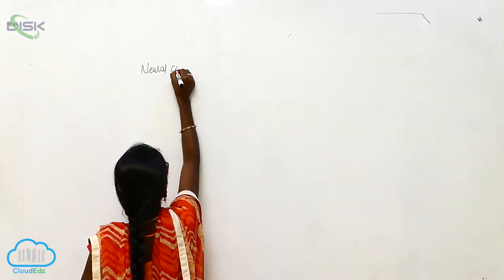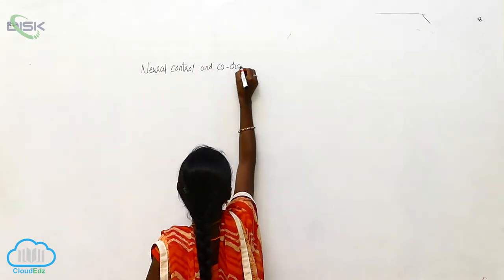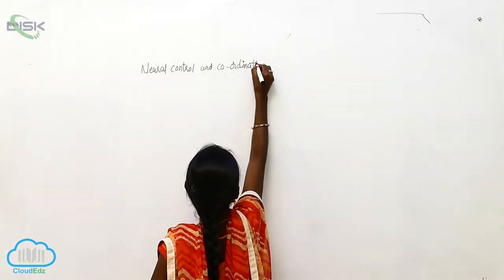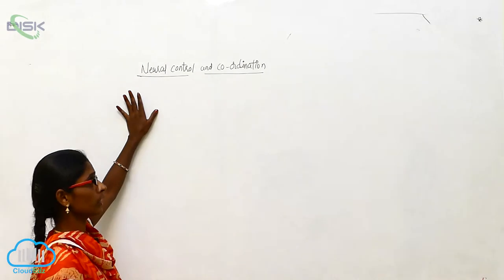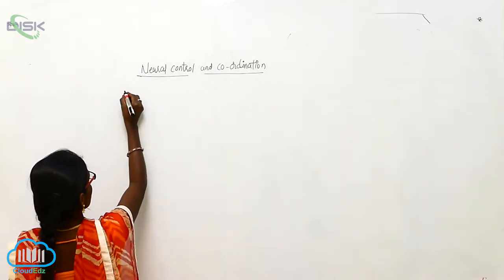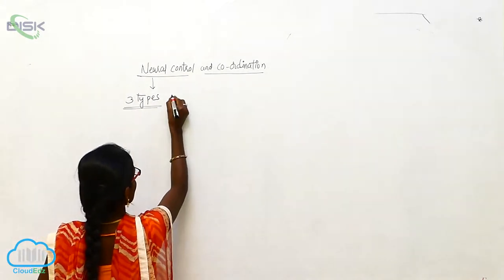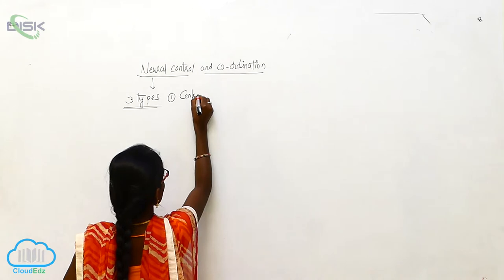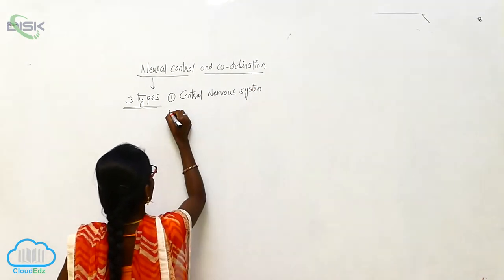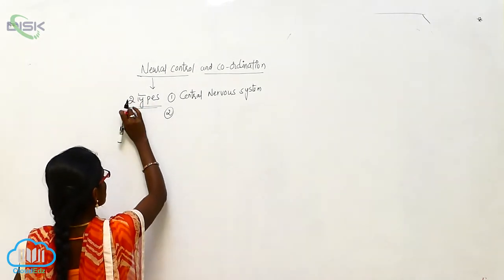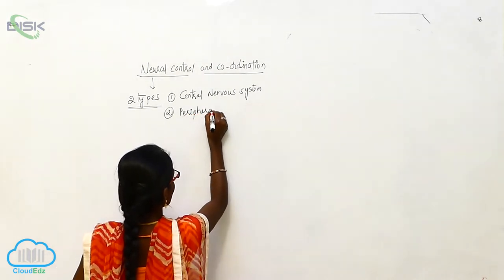Neural Control and Coordination. The neural system consists of two types: the Central Nervous System and the Peripheral Nervous System.